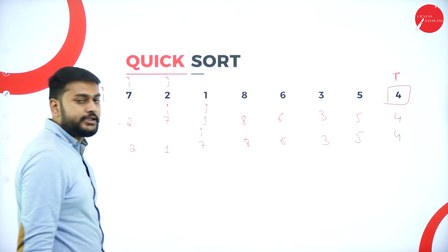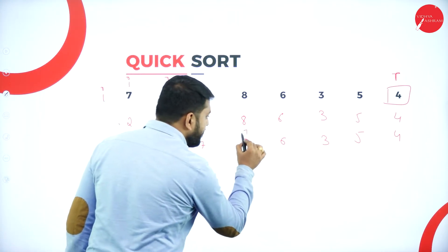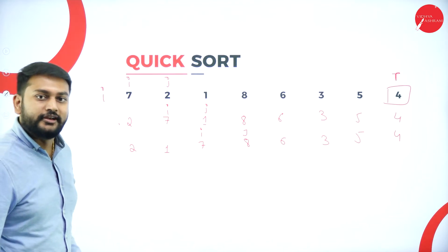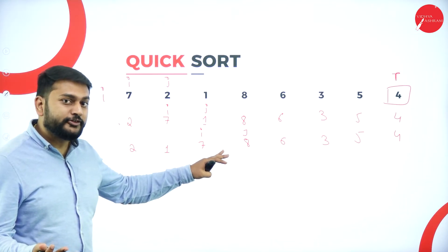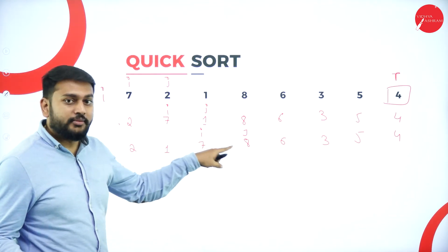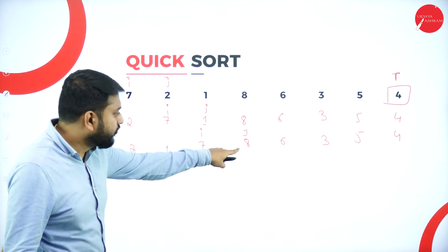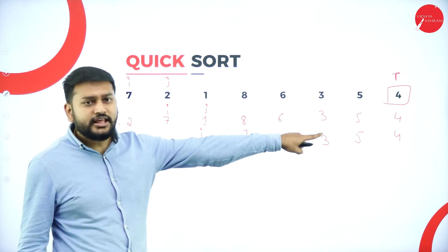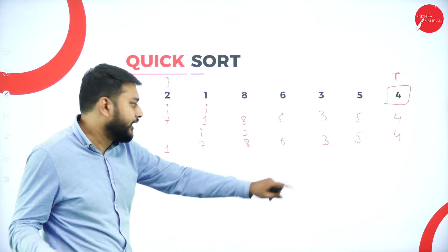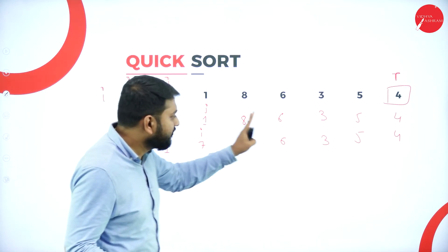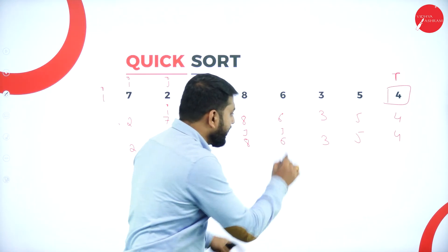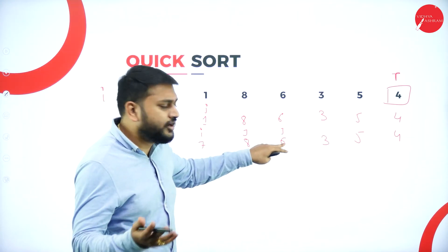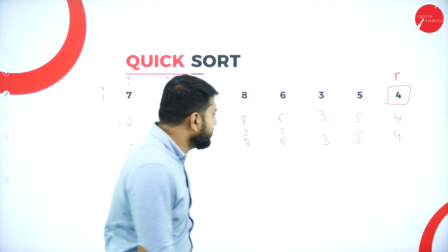Which number do I compare with pivot now? I compare the number J is pointing to. The value is eight. Eight is greater than four, so I don't swap — I retain it as is. J gets incremented to six. Again, I compare J with four — six is greater, so I don't swap. I increment J again.